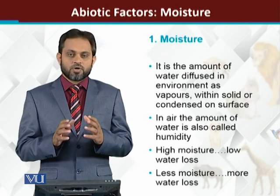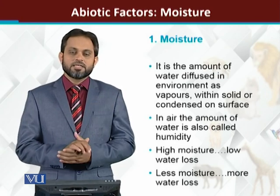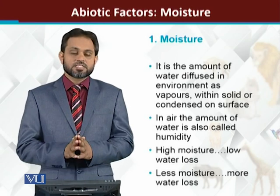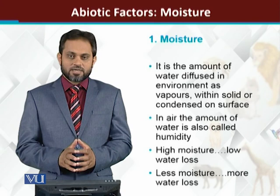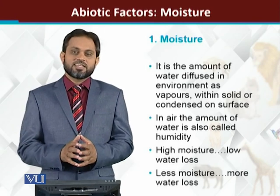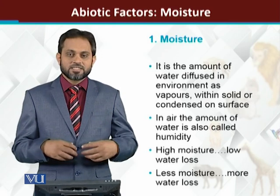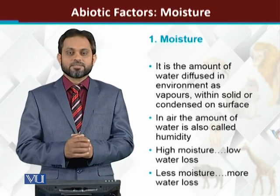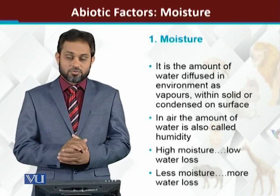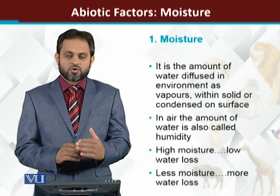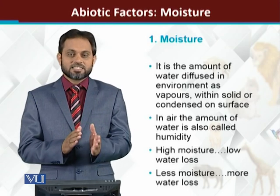The amount of moisture or amount of water vapors present in air is also called humidity. In an ecosystem, the amount of moisture is very important for animals. If there is more moisture in the environment, there will be less water loss from the body of animals. More moisture means less water loss, and less moisture means more water loss from the body of animals. So moisture is directly related to the animals.